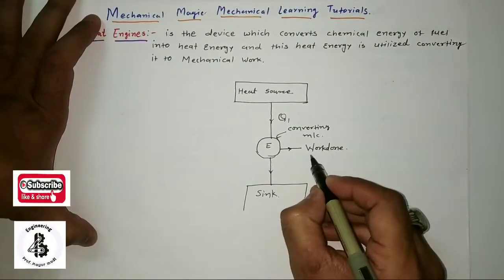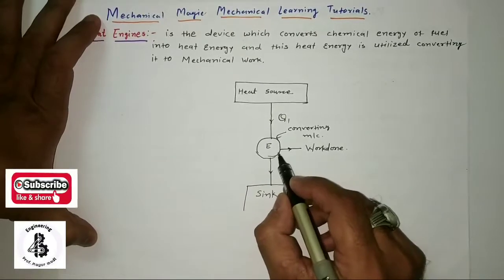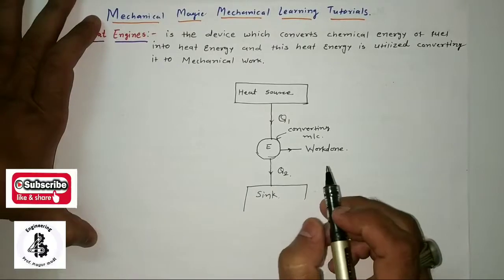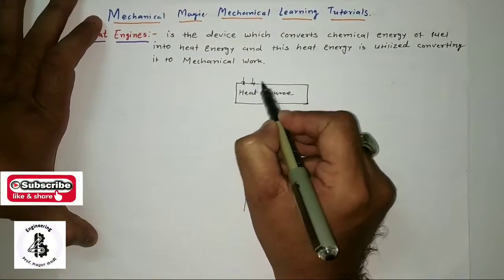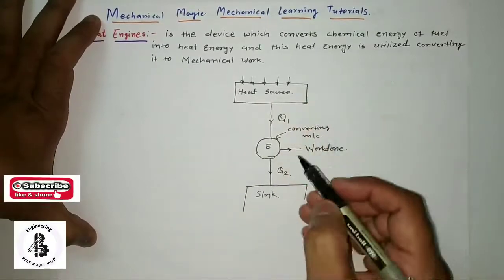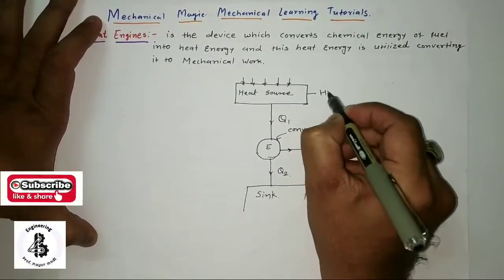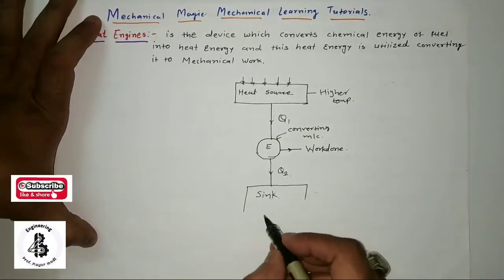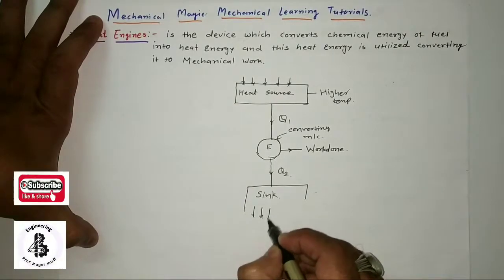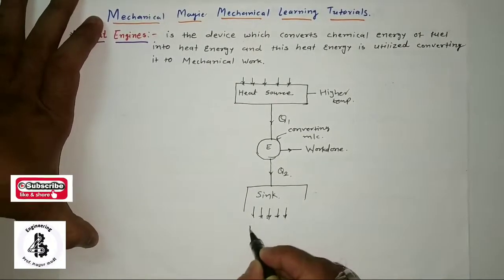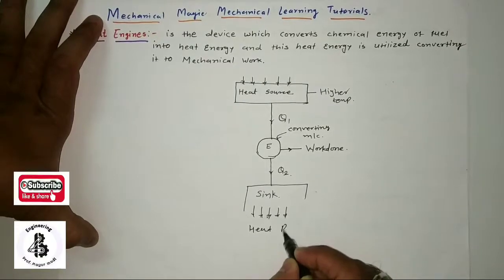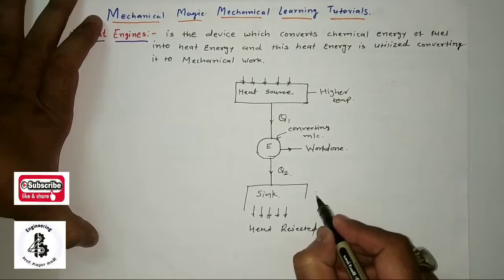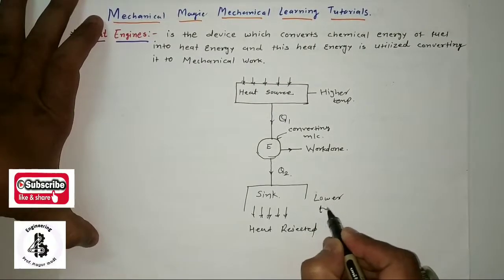And the W, that should be work done by the engine. And remaining heat that will be towards a sink. So from here by this source that will be having a higher temperature, and from sink, or you can say heat rejected, and that will be at lower temperature.